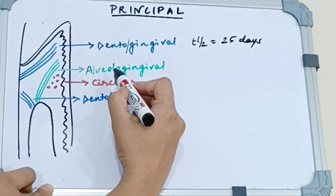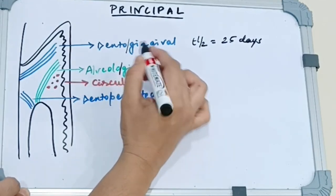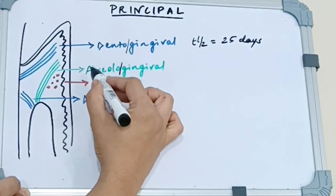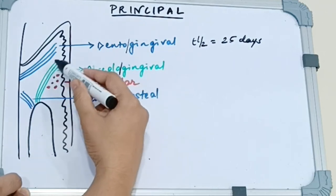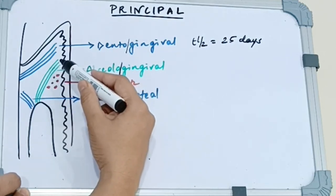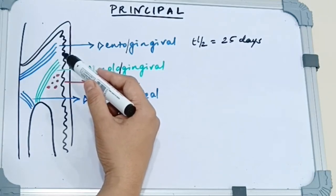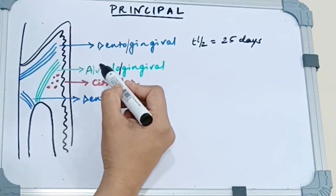Next we have the alveologingival. Again when you break it up here, these provide a connection between the bone and the gingiva. They insert into the lamina propria. So they attach the attached gingiva to the alveolar bone.